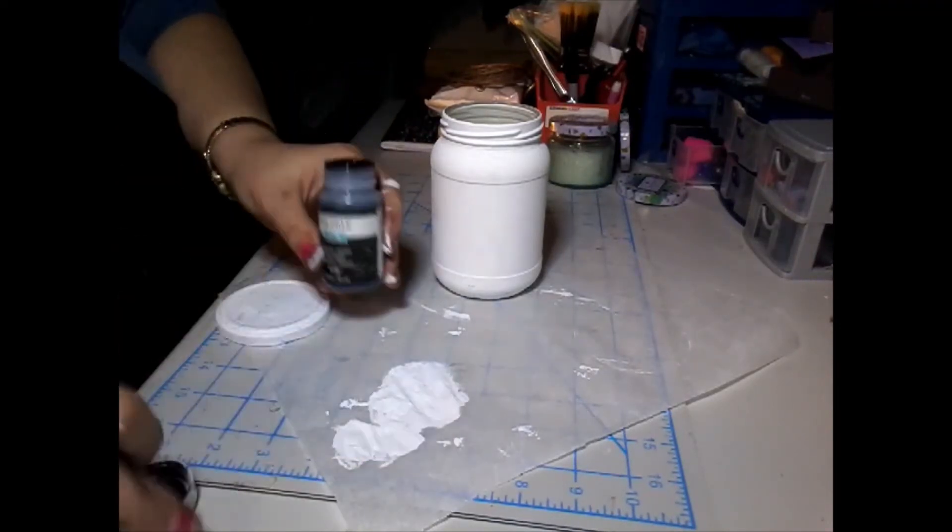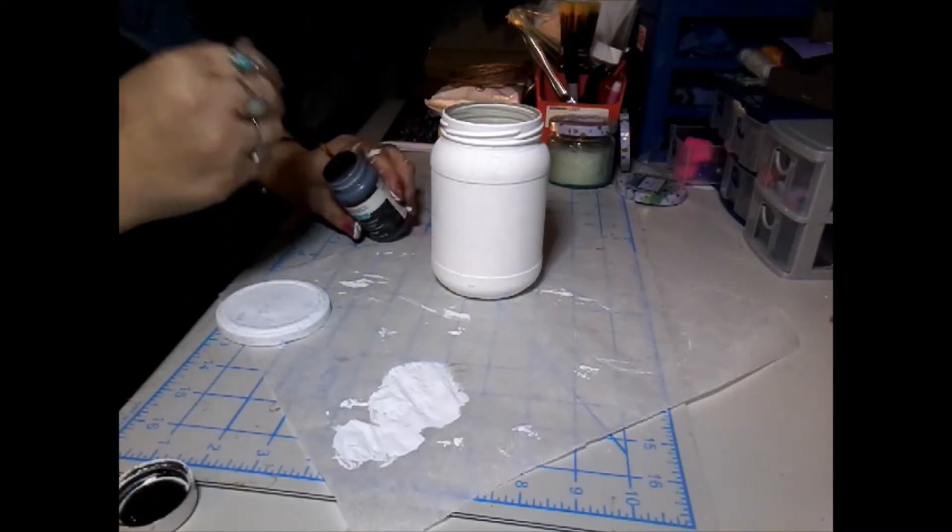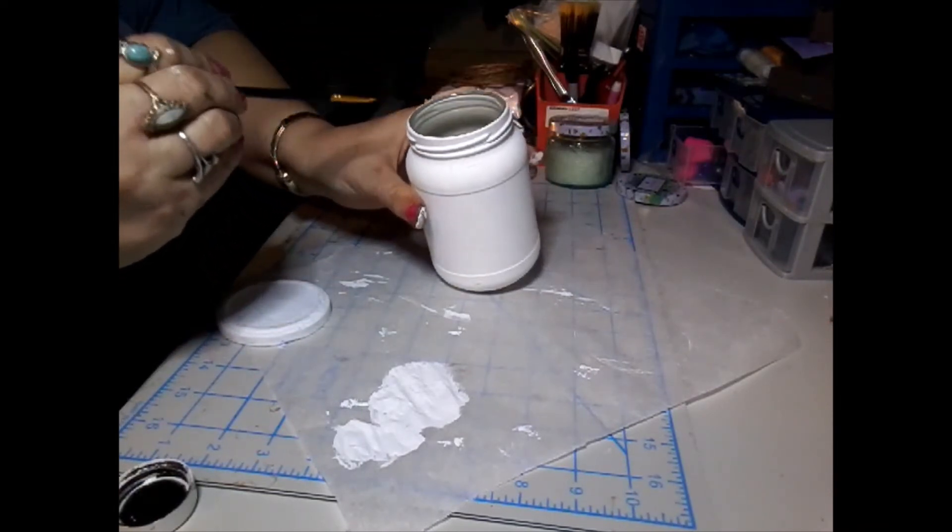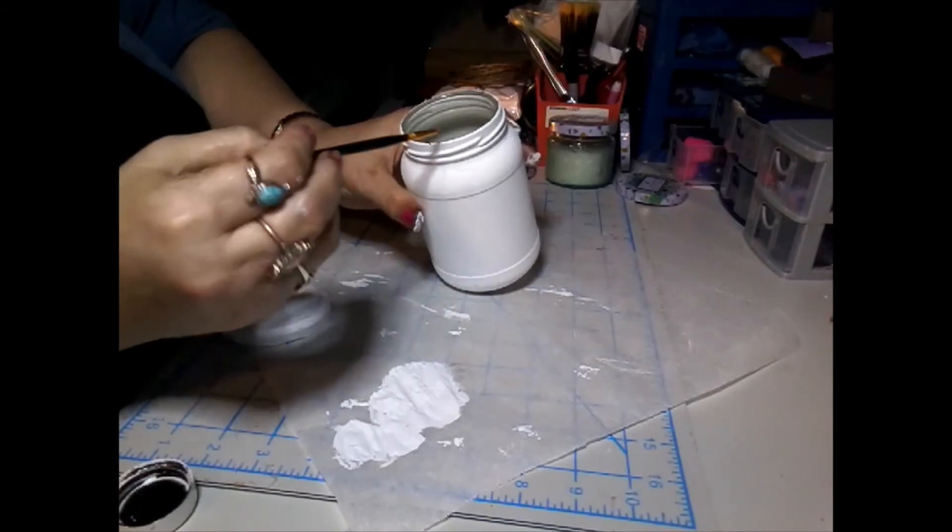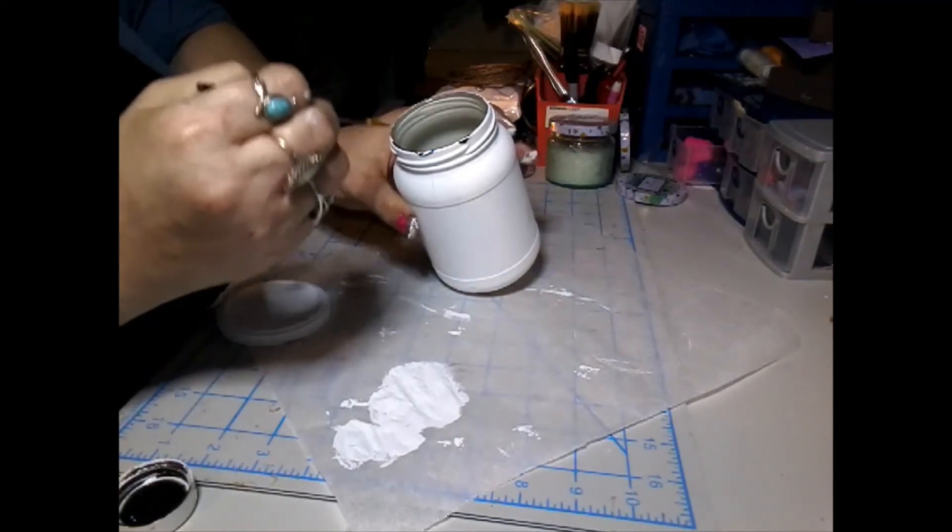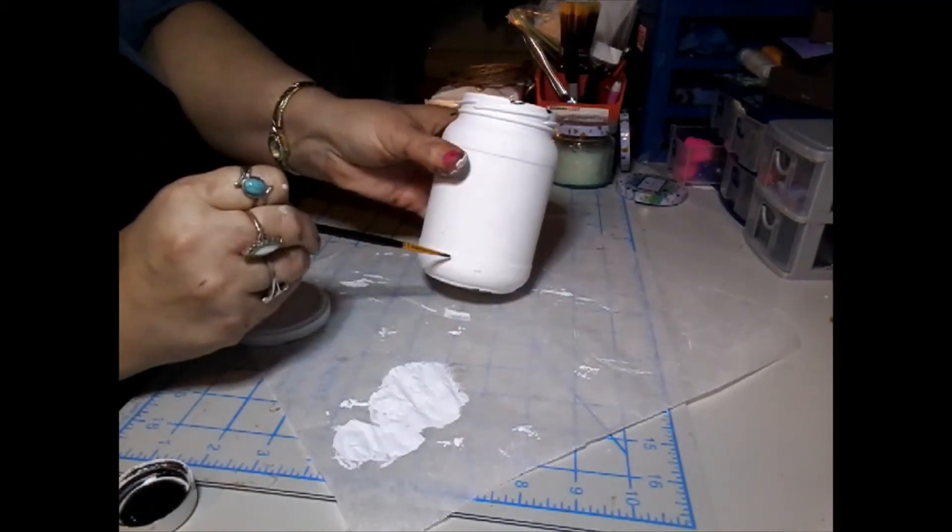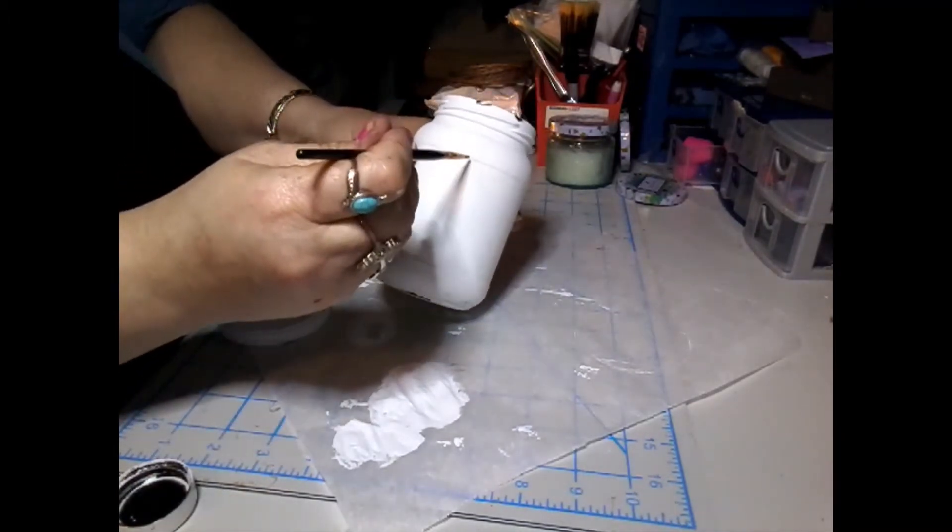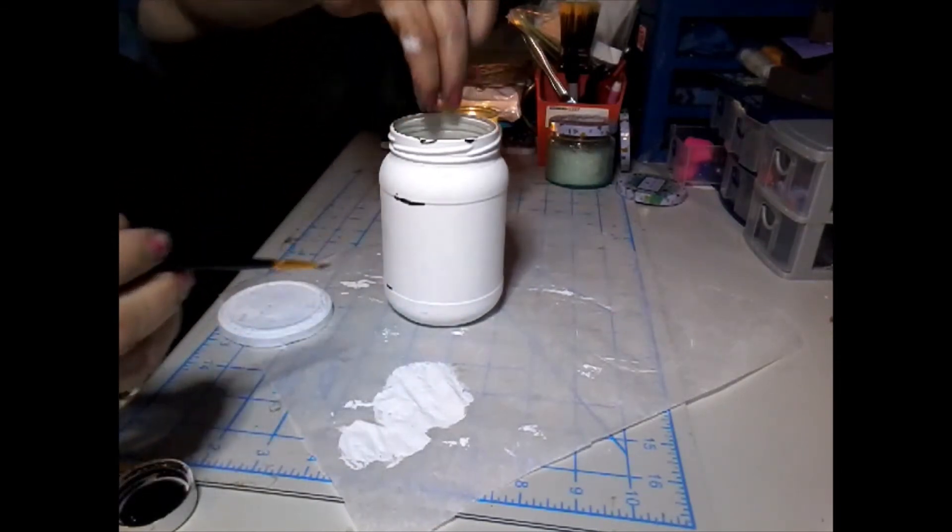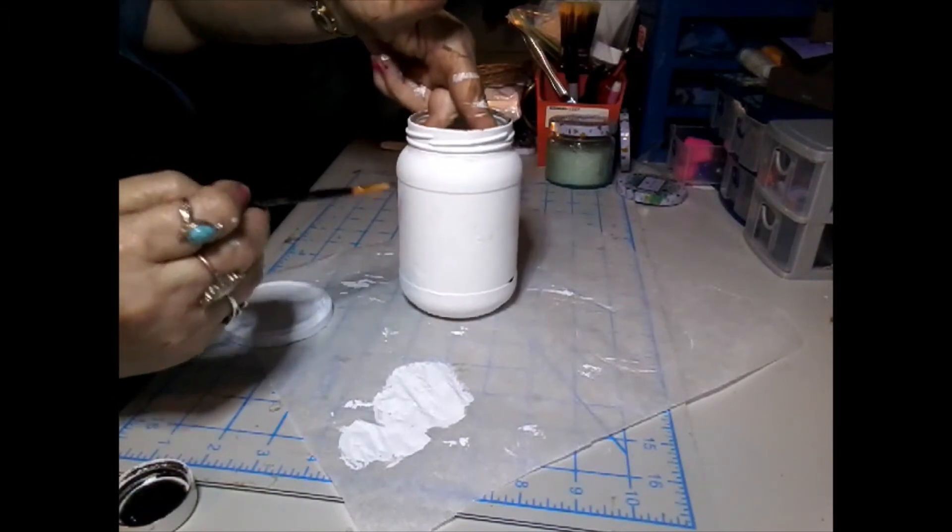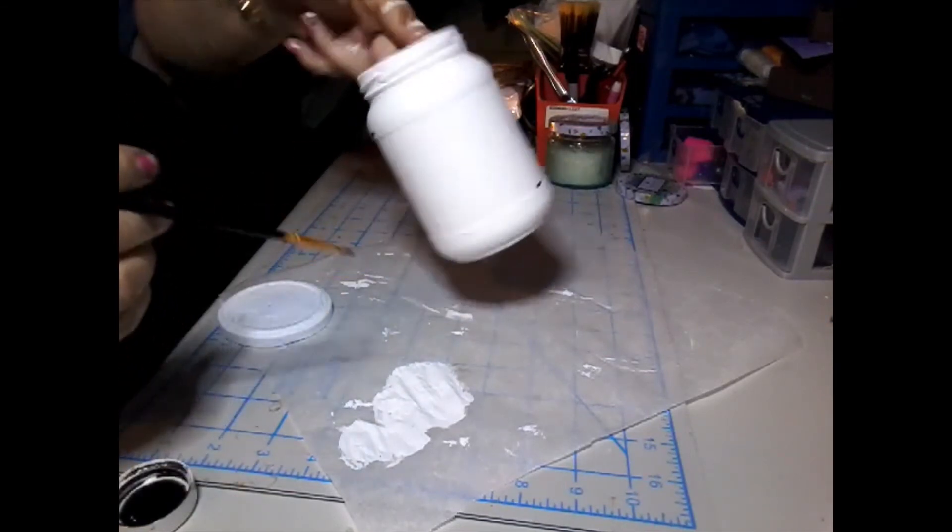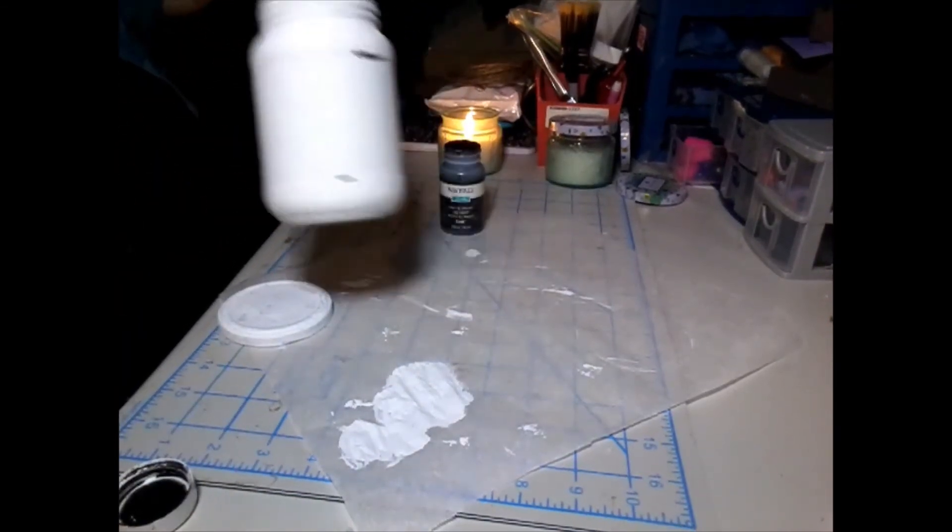After the second coat, I'm going to take this Waverly paint in the color ink and I'm going to start dabbing it along the top. I want to give this like an enamel look, like the paint's been chipped off and that there's enamel showing through. I'm going to add the black to the top and little splotches here and there, just to make it look like paint has rubbed off and enamel showing through. I'm just going to go around and add the black just here and there just to make it look like enamel.